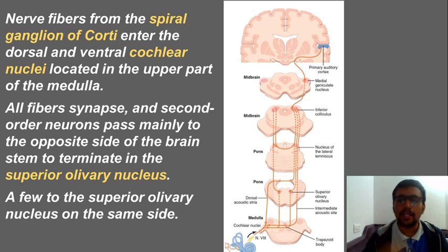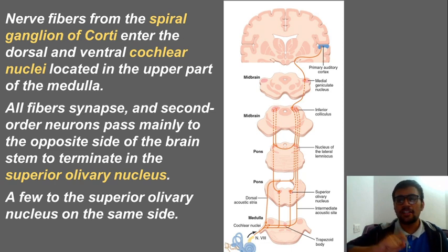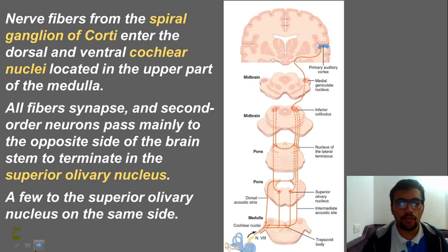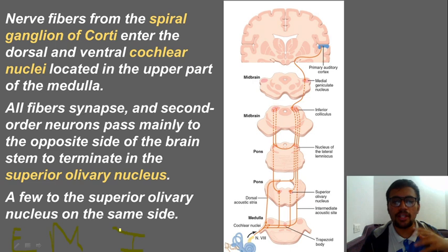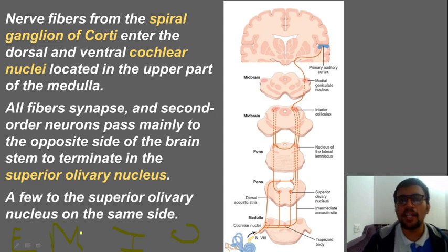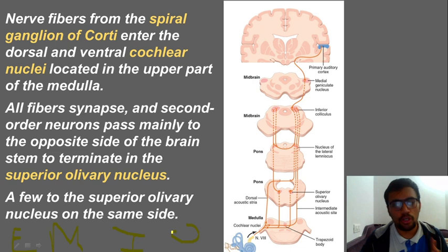The auditory pathway is very easy — I can tell you in two minutes — but I will explain and give you the language you need to write it. You can't simply draw a flowchart; you need language for that. Whenever you write the auditory pathway, you should always start from the external ear itself, which transmits sound to the middle ear, then the inner ear. You write some information about the middle ear, impedance matching, and then start with the organ of Corti.